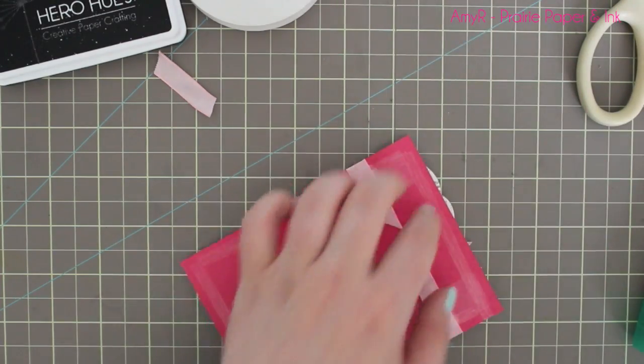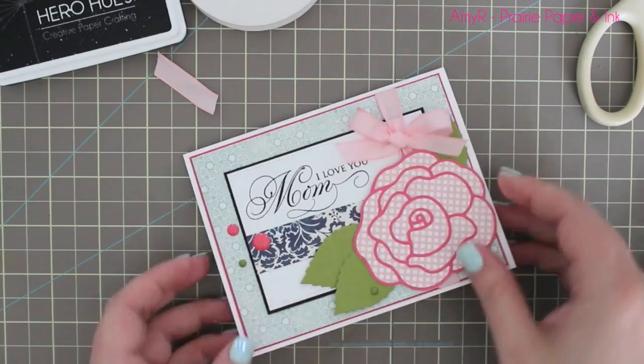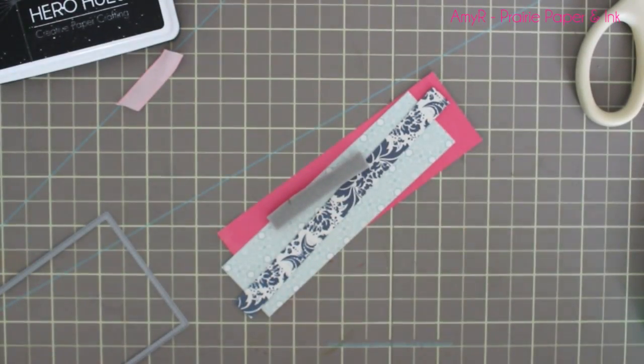Then I'm going to adhere this to my white card base. This is a standard A2 card—four and a quarter by five and a half inches—and it's a top-folding card. Got that adhered.